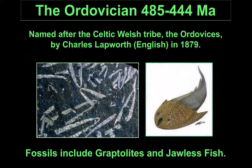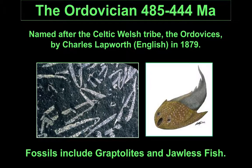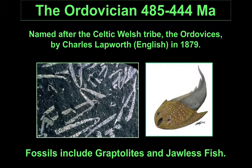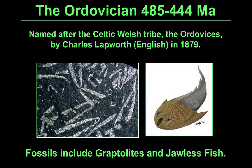This is followed by the Ordovician period, named after a Welsh tribe. Again it's defined by the rocks found in Wales, in particular by the graptolite fossils. This is where we see very rapid evolution and very distinctive changes in the graptolites. Other animals that evolved at this time include the jawless fish, precursor for the vertebrate fossils.